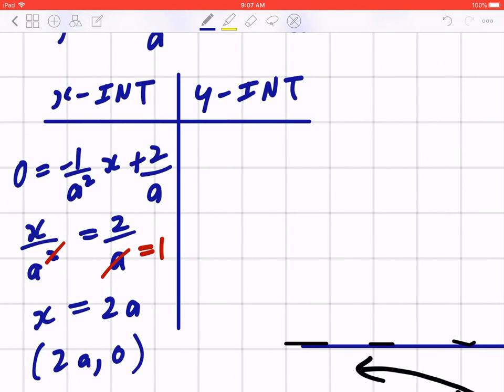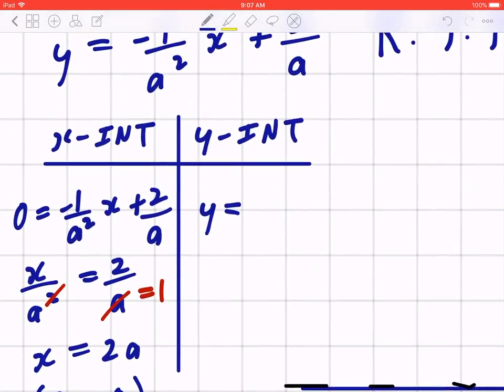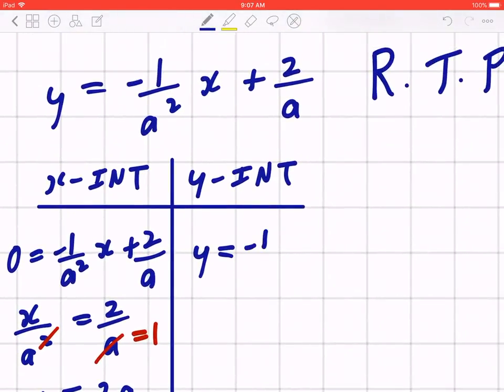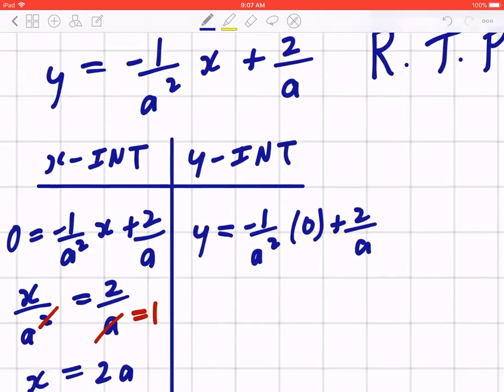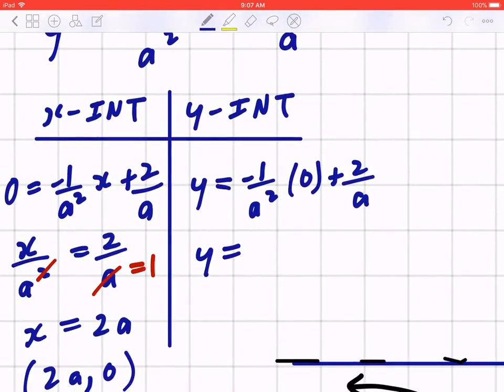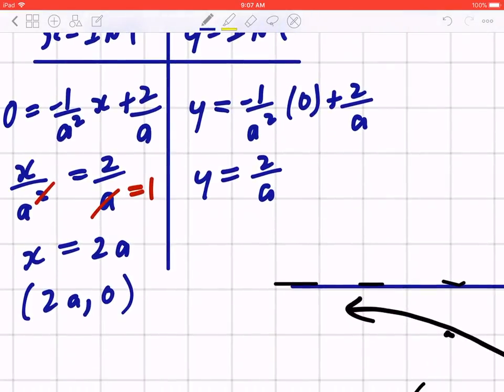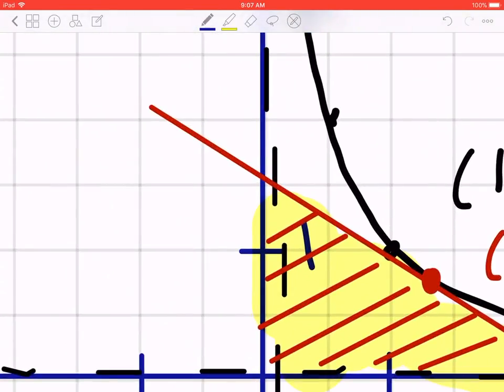Likewise, in the second column, to find the y intercept, you have to set x to be zero, solve for y. So this is negative 1 over a squared times zero plus 2 over a. And again, y equals 2 over a. In terms of the coordinate, it's going to be (0, 2/a). Let's update that as well. So this point is going to be (0, 2/a).